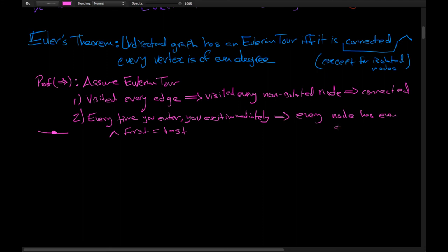We're left with only the first and last node possibly having odd degree, but since the first node equals the last node — they're the same node — this implies every node has even degree. You can match the edge exiting your first node with the edge entering it on return, and you'll see that every single node, including the first and last node, must have even degree.